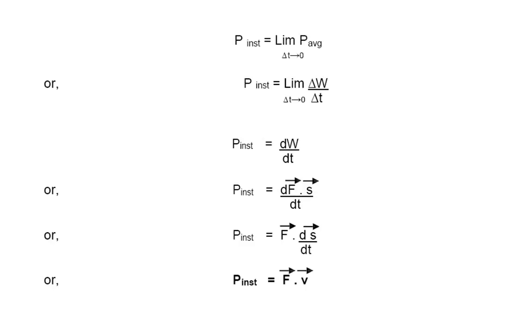That shows that power is also a dot product of two vector quantities, and hence it is a scalar quantity.